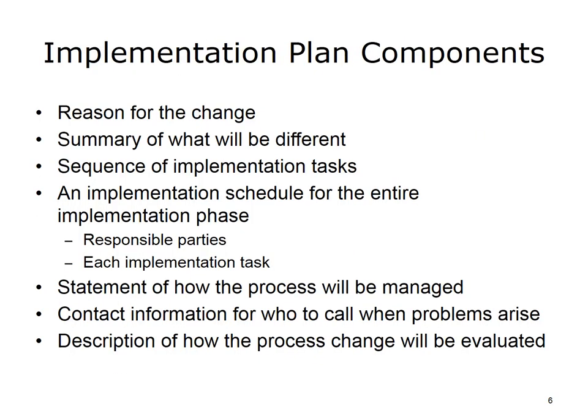An implementation plan contains the following components: reason for the process change; summary of what will be different with reference to the as-is and to-be documentation, where it is located in the documents or in an appendix. Where the process change is significant, this may include step-by-step instructions for new workflows. Sequence of implementation tasks to be accomplished — these can include walkthroughs, training, production and distribution of job aids, software changes, or go-live of new systems. Responsible parties for each implementation task. An implementation schedule for the entire implementation phase and statement of how the process will be managed. Contact information for who to call when problems arise. And a description of how the process change will be evaluated — an evaluation plan.